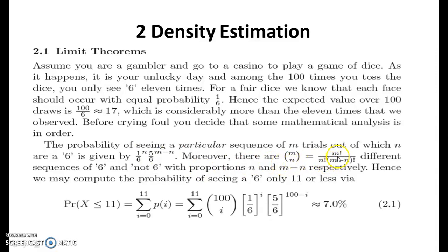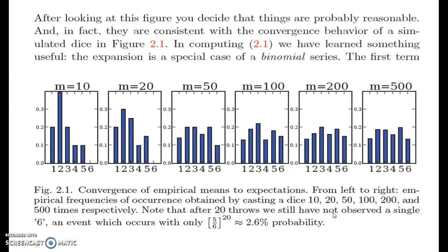Moreover, there are (m choose n) equals m factorial by n factorial times (m minus n) factorial different sequences of 6 and not 6 with proportions n and m minus n respectively. Hence we may compute the probability of seeing a 6 only 11 or less via: the probability of X less than or equal to 11 equals the sum from i equals 0 to 11 of probability of i equals sigma i equals 0 to 11 of (100 choose i) times 1 by 6 to the power of i times 5 by 6 to the power of 100 minus i, which will approximately equal to 7.0%. After looking at this figure, you decide that things are probably reasonable.